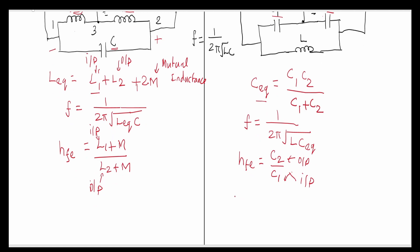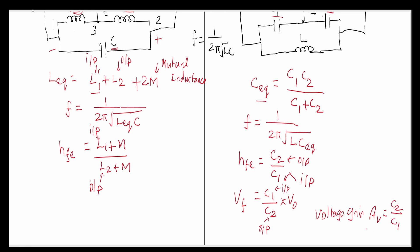For the Colpitts oscillator, the feedback voltage equals (C1 / C2) · V0, where C1 is the capacitor on the input side. The voltage gain Av is also equal to C2 / C1. Remember that in both cases, for oscillation, beta · Av must equal 1, where beta is the feedback factor.